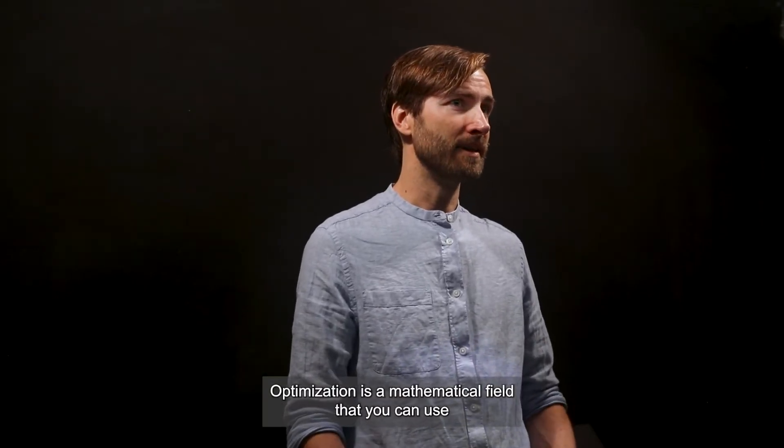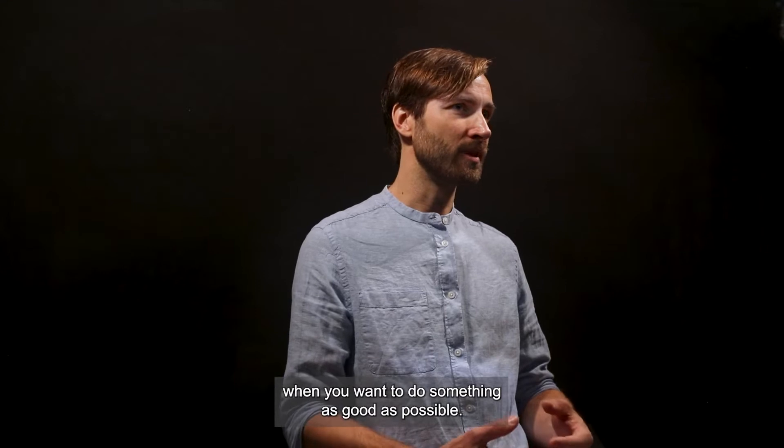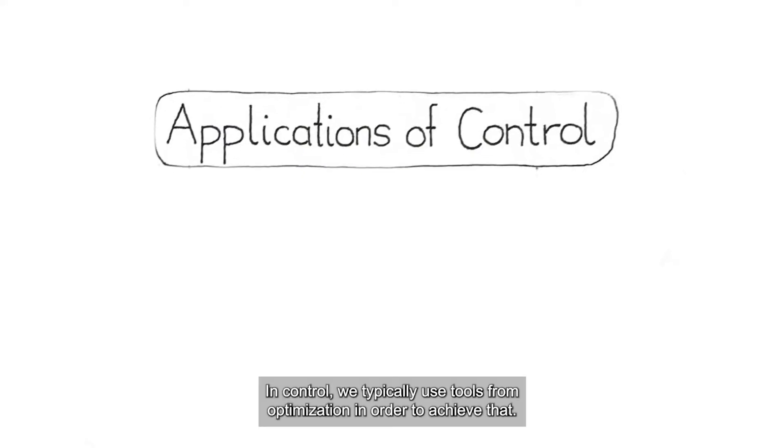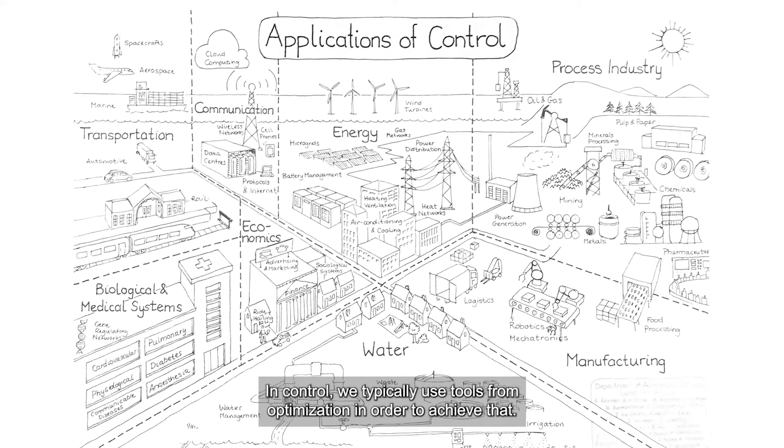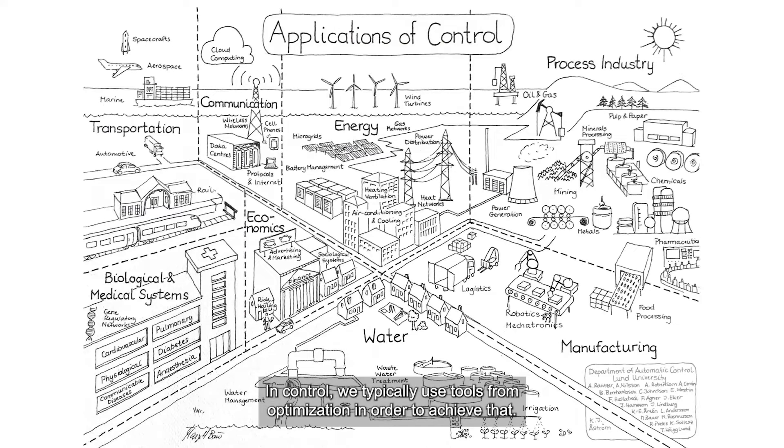Optimization is a mathematical field that you can use when you want to do something as good as possible. So in control we typically use tools from optimization in order to achieve that. But optimization is not restricted to only be applied in control.